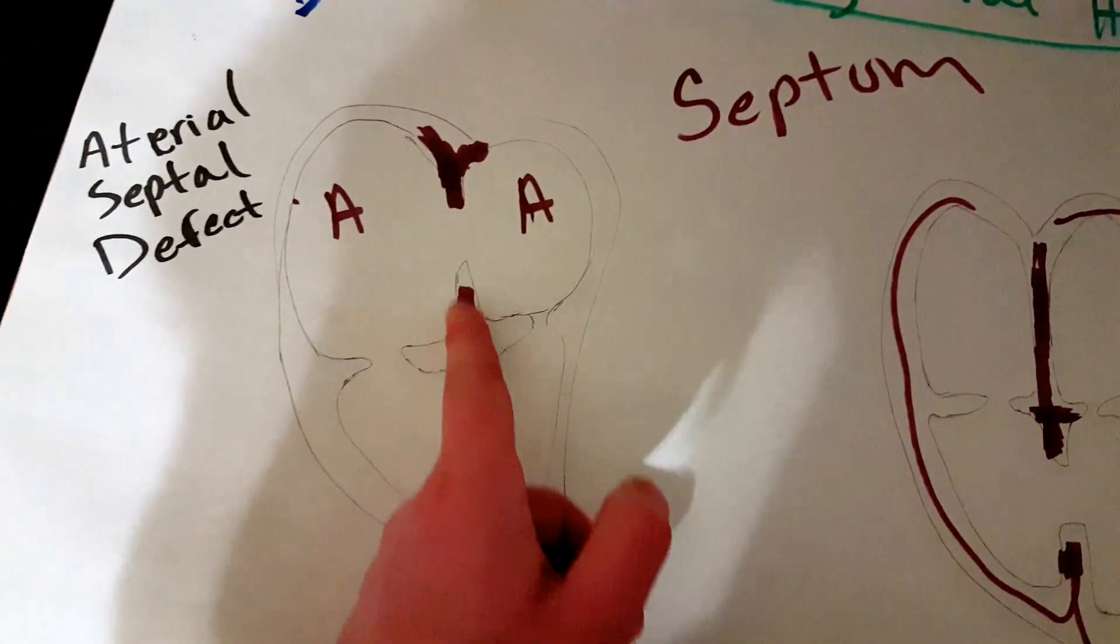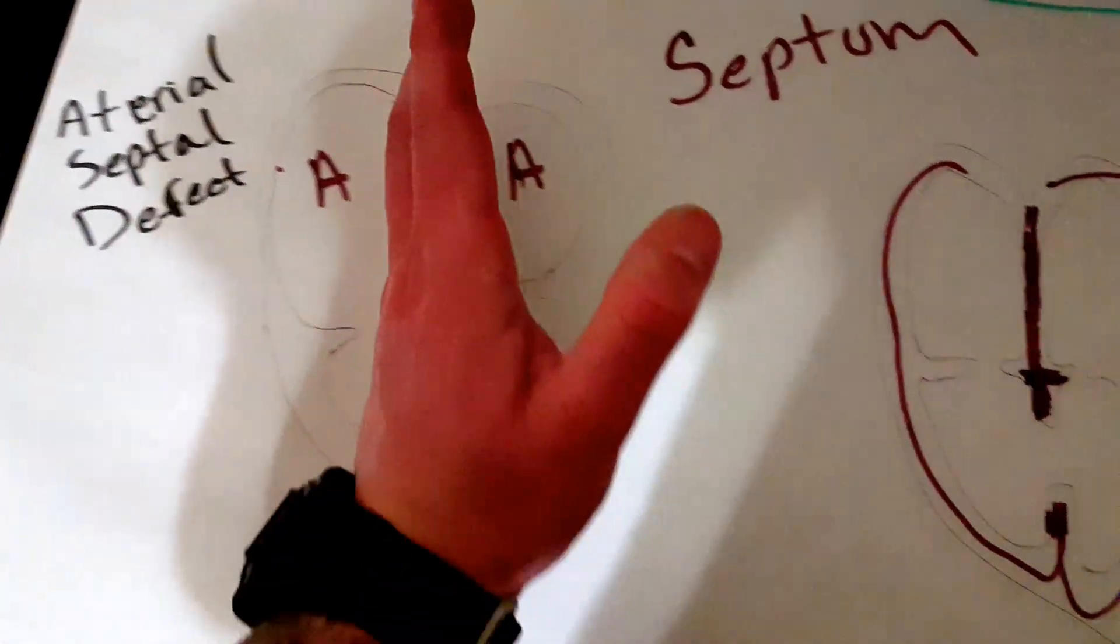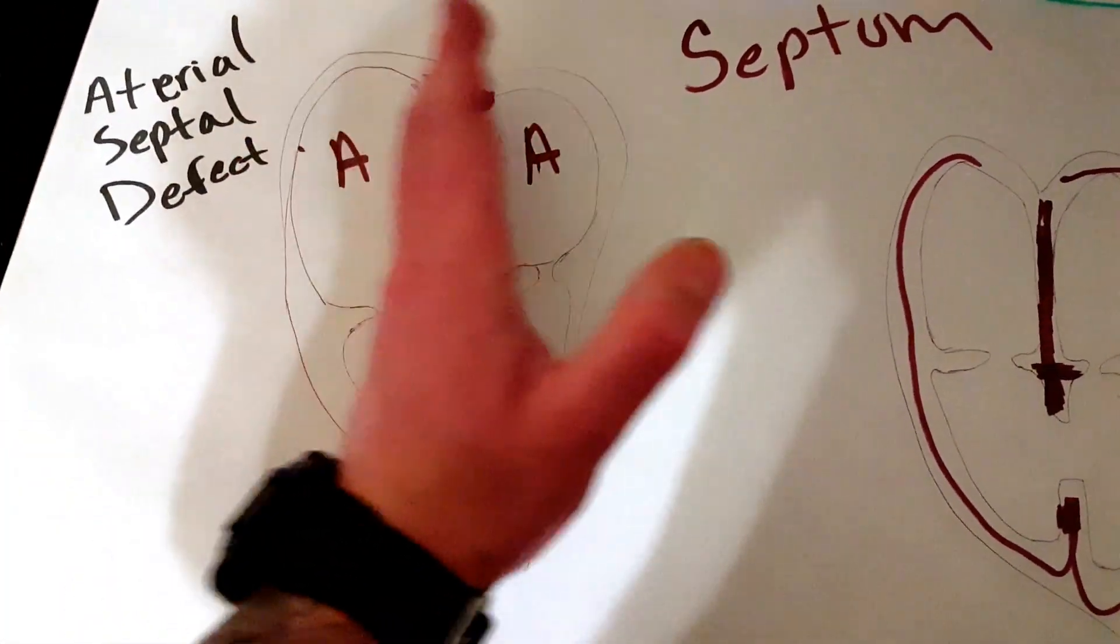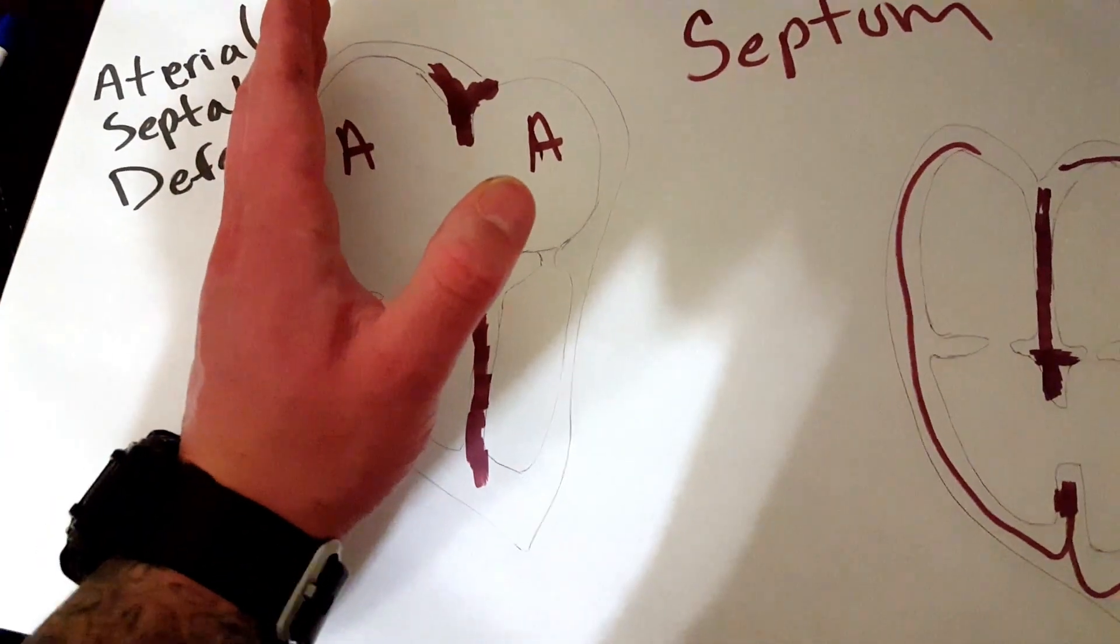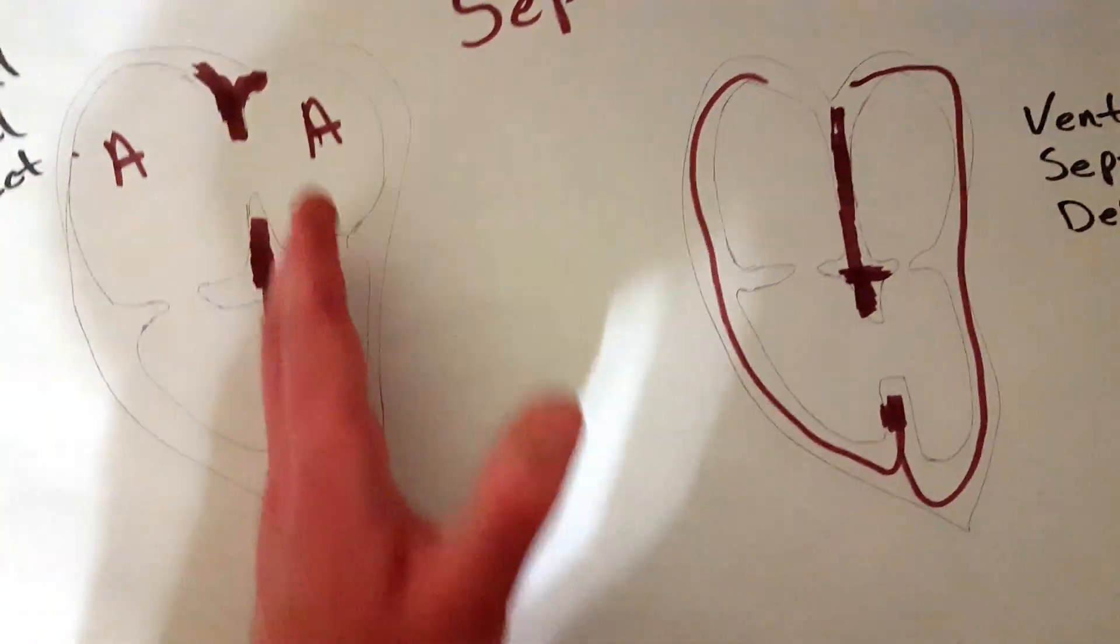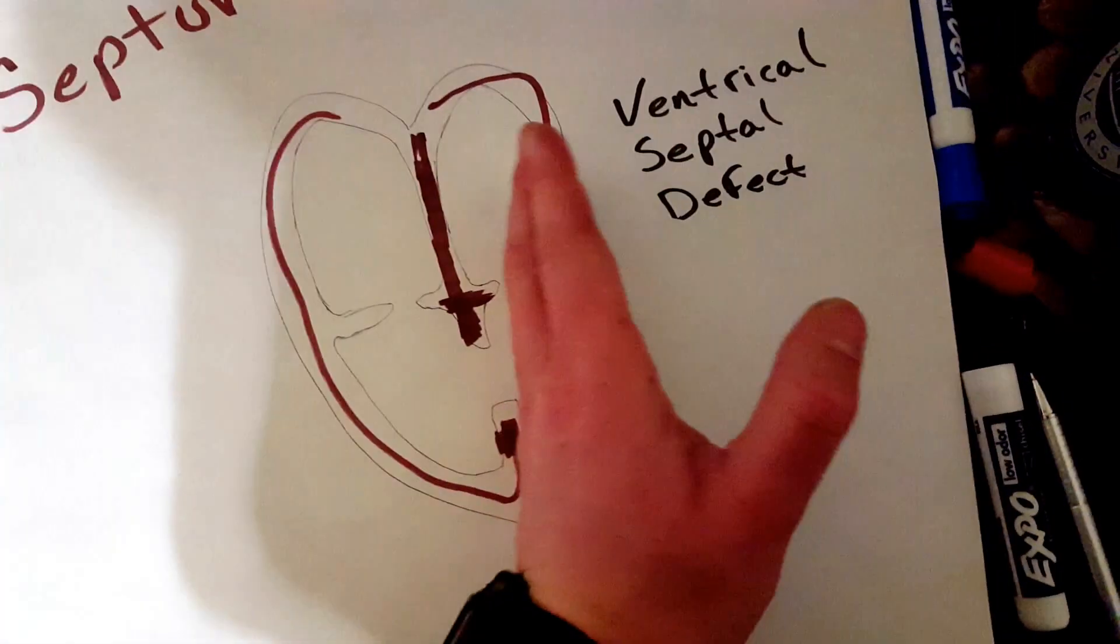The septum is this right here. The middle part. That middle wall within the heart that divides the right side of the heart from the left side of the heart. This is the septum. Right here. Septum.